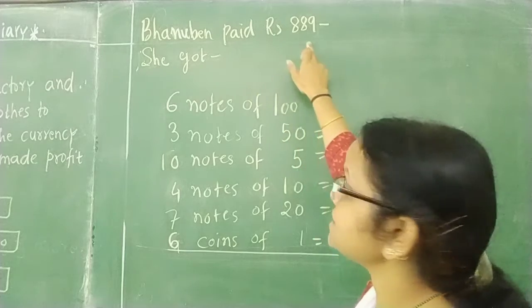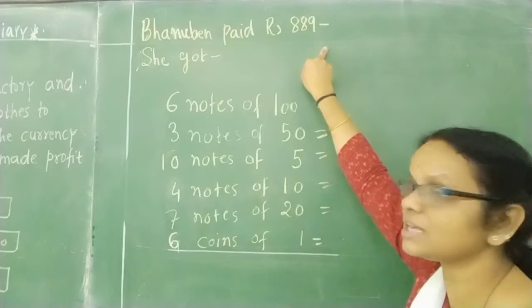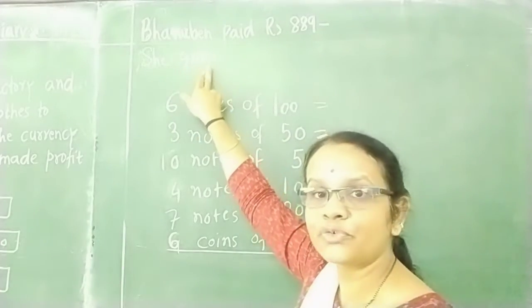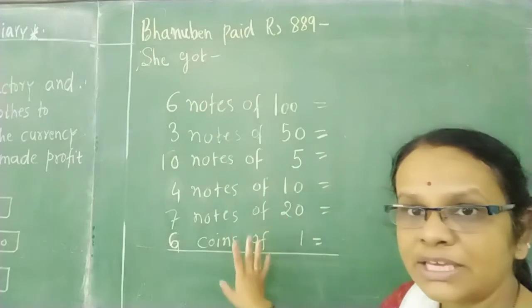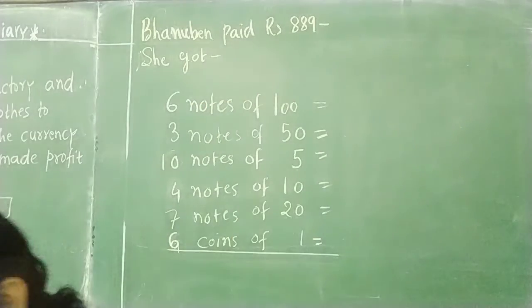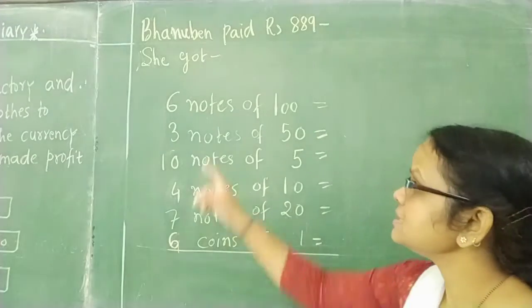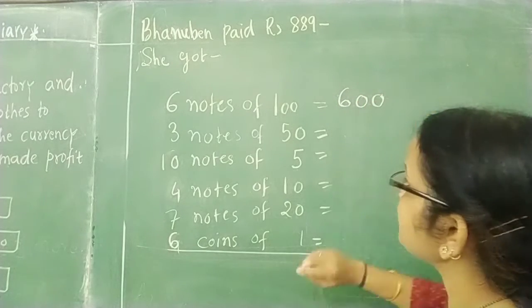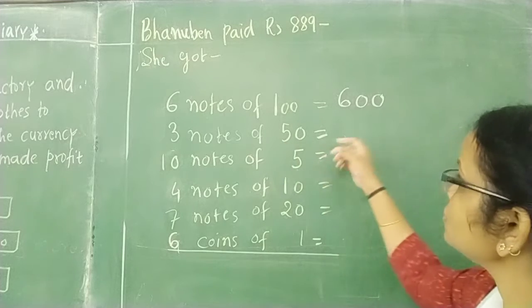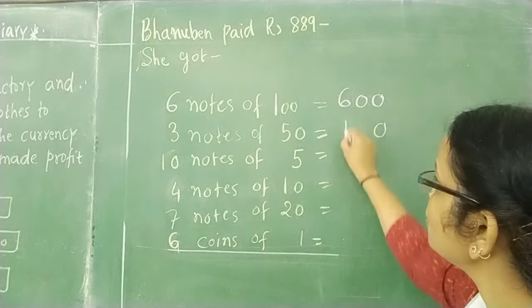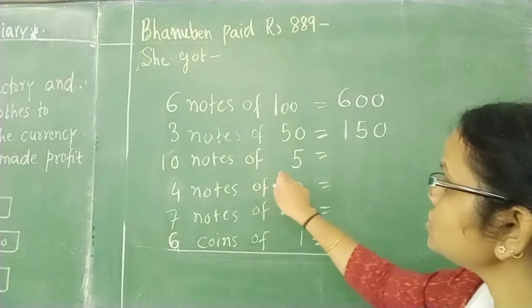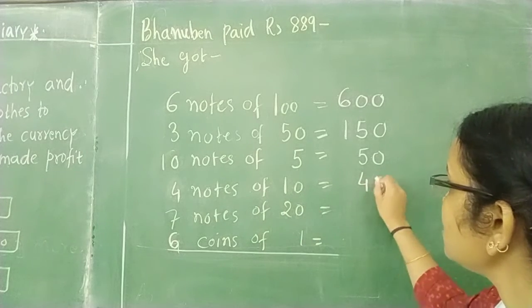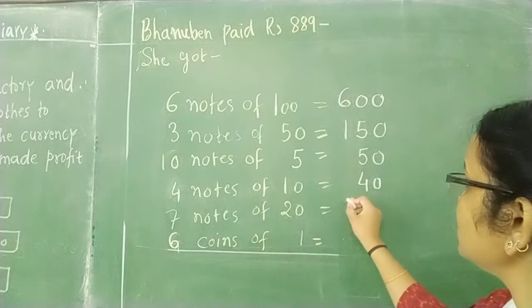As I told you: 6 notes of 100 — that is 600. Then 3 notes of 50 — 3 fives are 15, so that is 150. Then 10 notes of 5 — 10 fives are 50. Then 4 notes of 10 — 4 tens are 40. Then 7 notes of 20 — that is 140. And 6 coins of 1 rupee — that is 6. Now we have to add all of these.